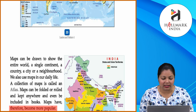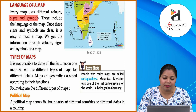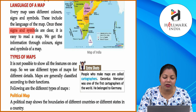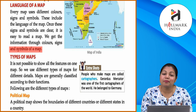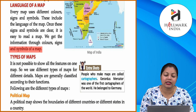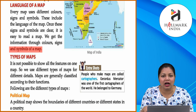Now, language of a map. Every map uses different colors, signs and symbols — these include the language of the map. Once these signs and symbols are clear, it is easy to read a map. We get information through color, signs and symbols of a map. Har map alag languages ko use karta hai, jaise ke colors, signs, symbols — yeh use kiye jaate hain clearly batane ke liye ke map mein kaunsi jagah kahan pe hai.